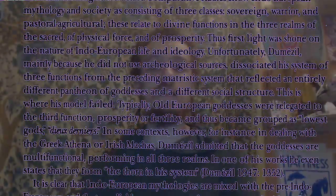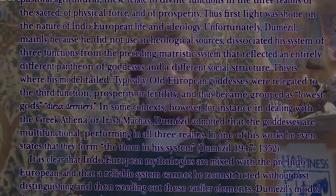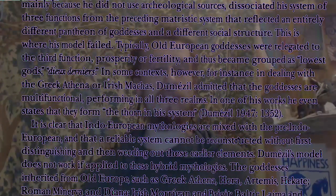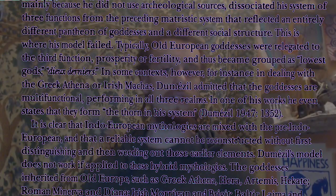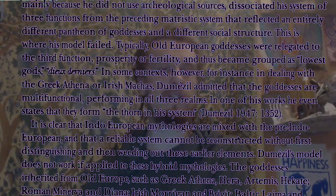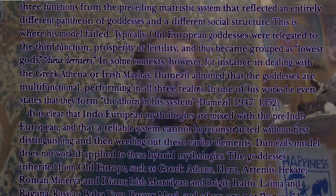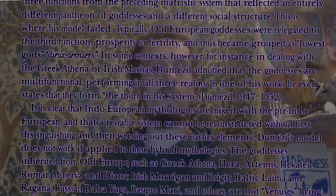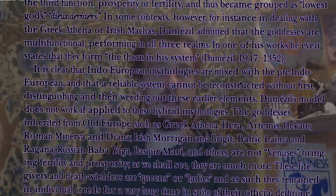Unfortunately, Dumézil, mainly because he did not use archaeological sources, dissociated his system of three functions from the preceding matriistic system that reflected an entirely different pantheon of goddesses and a different social structure. This is where his model failed. Typically, old European goddesses were relegated to the third function — prosperity or fertility — and thus became grouped as the lowest gods, Dii Denereneres. In some contexts, however, such as in dealing with Greek Athena or Irish Macha, Dumézil admitted that the goddesses are multifunctional, performing in all three realms. In one of his works he even states that they formed 'the thorn in his system.'